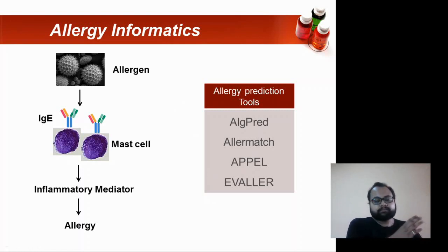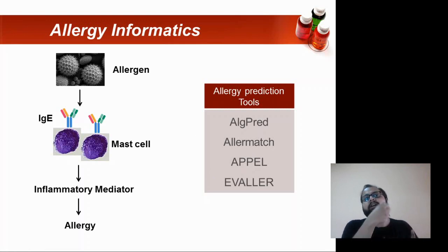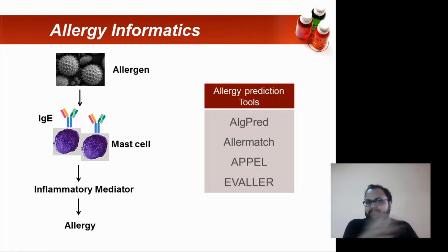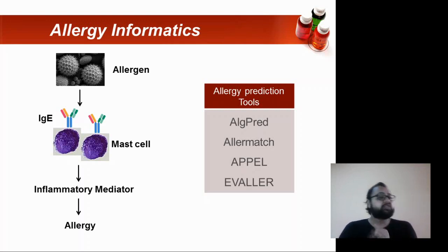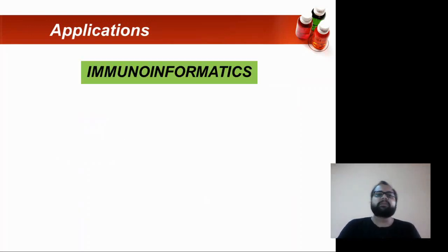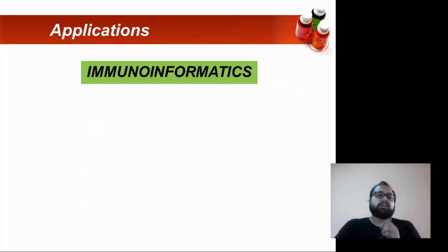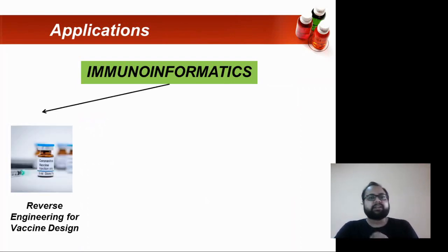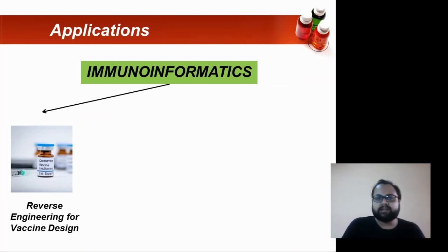So when we talk about immunomics tools and algorithms, these are the various methods for B-cell prediction, T-cell prediction, and allergen prediction. The last part is nothing but the applications of immunoinformatics, which plays a very critical role in reverse engineering and vaccine design.